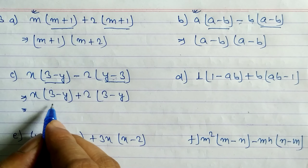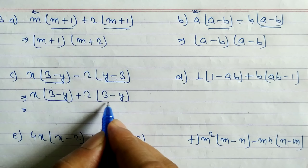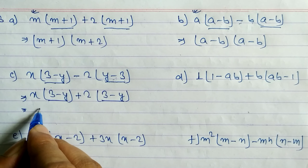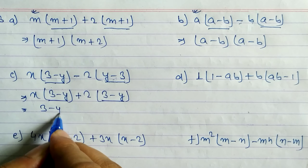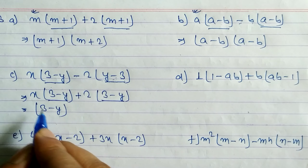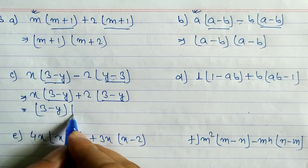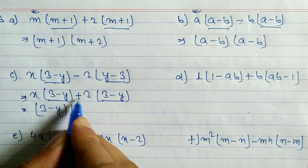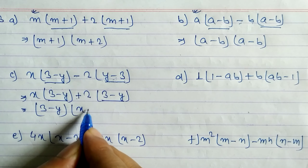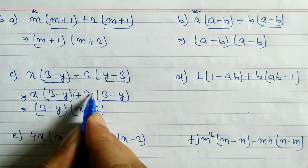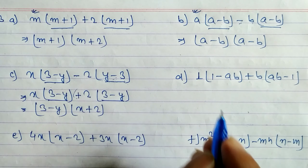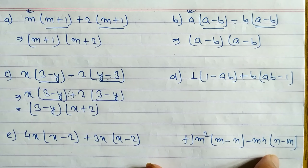Now you can see both terms are the same, so we can take 3 minus y as common. What is remaining is x plus 2, so we write x plus 2 with the sign.